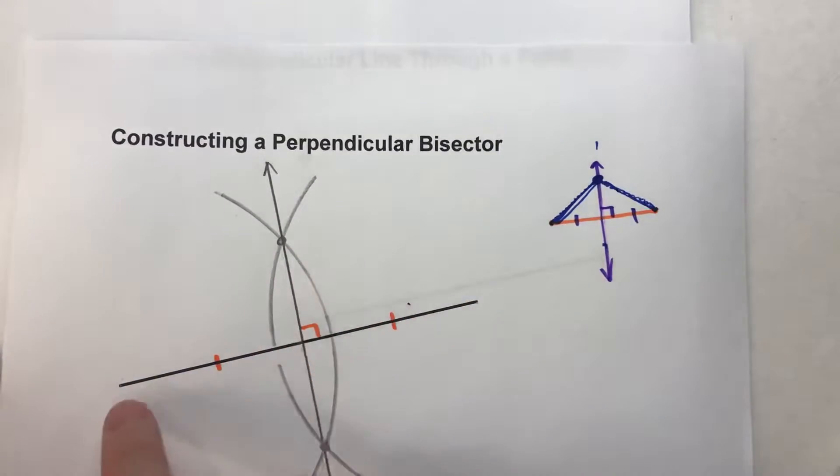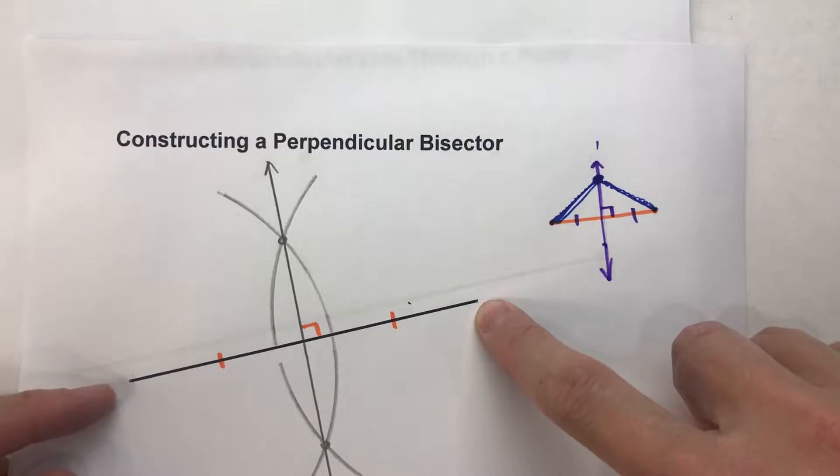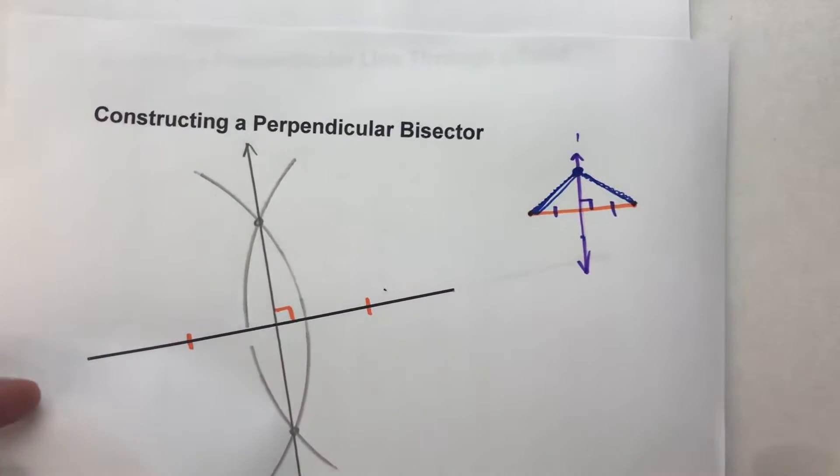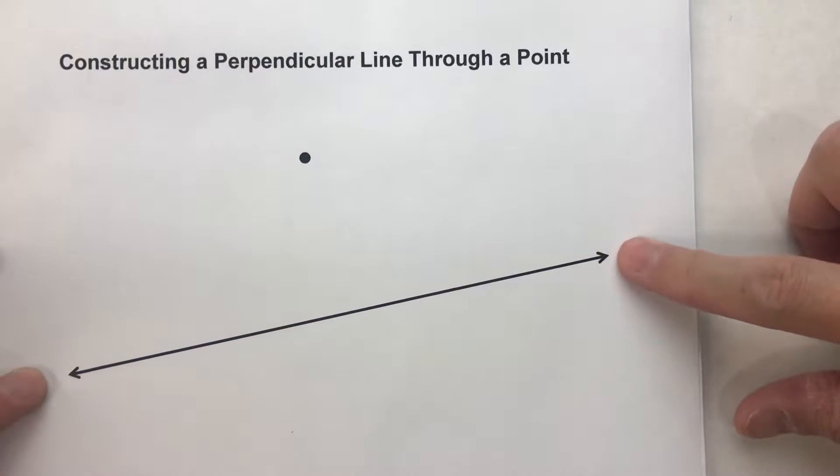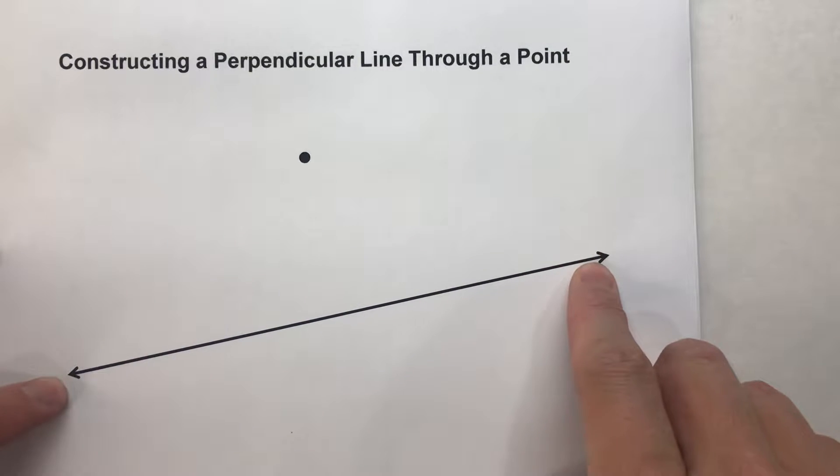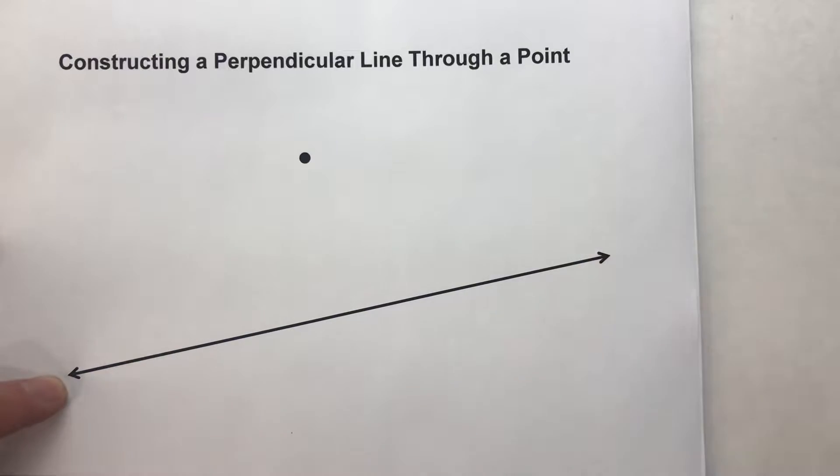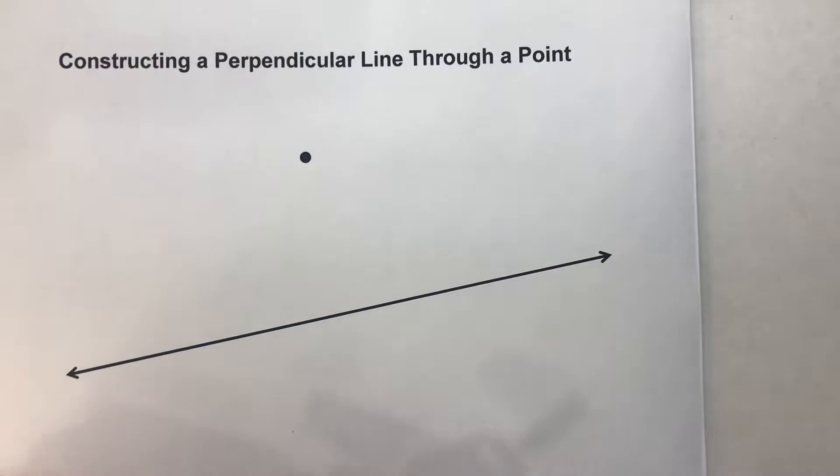With a perpendicular bisector, we have the endpoints of a line segment to work off of when we swing our arcs. When we're constructing a perpendicular to a line, the line has no ends. So we can't swing an arc off the ends of the line because it never ends.